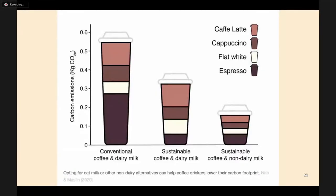On a scale of carbon emissions, a conventional coffee can be up to 0.6 kg per serving, but if produced sustainably that's much less — and if made with a non-dairy milk like soy or coconut, it's significantly less still. However, to change consumption patterns we have to accept some flavor differences; we cannot separate our personal preferences from our responsibility toward reducing our carbon footprint.